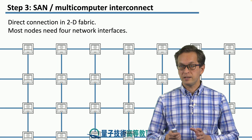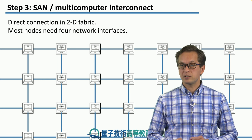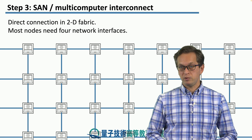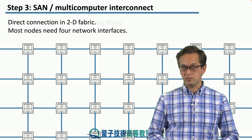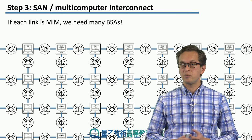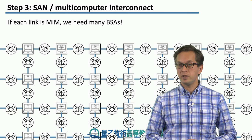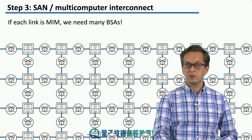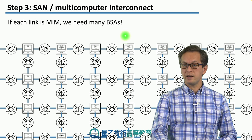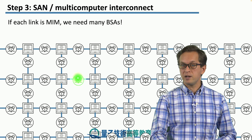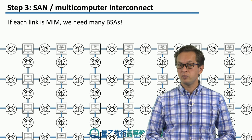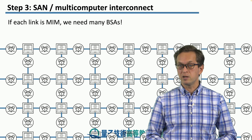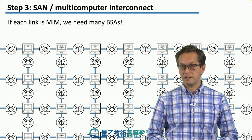What this picture doesn't show is how to create entanglement between these computational nodes. For that, we need to include our BSA if we are using the meet-in-the-middle link architecture. Here we have a symbol for our BSAs, or Bell State Analyzers. As you can see, a crazy amount of Bell State Analyzers are needed — for every link in our interconnect, we need a separate Bell State Analyzer.